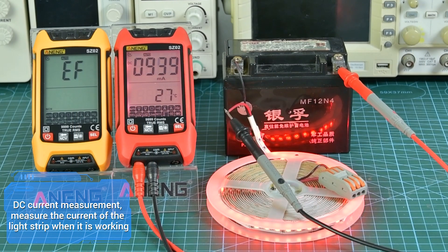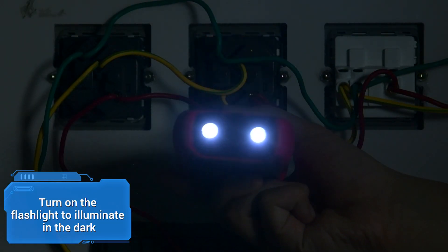For DC current measurement, measure the current of the light strip when it's working. Turn on the flashlight to illuminate in the dark.